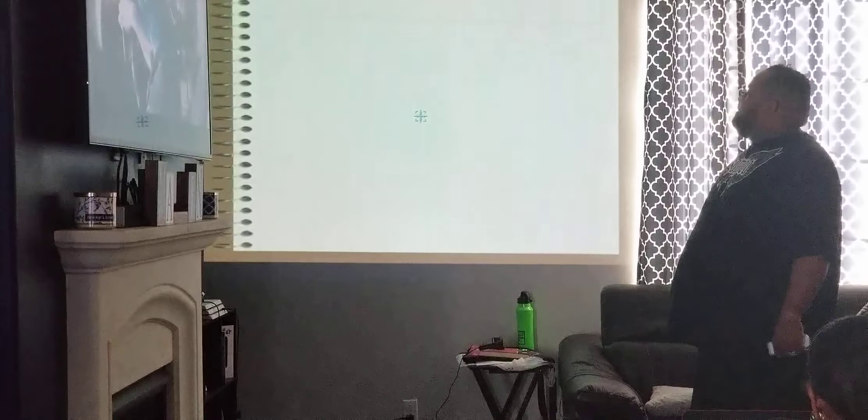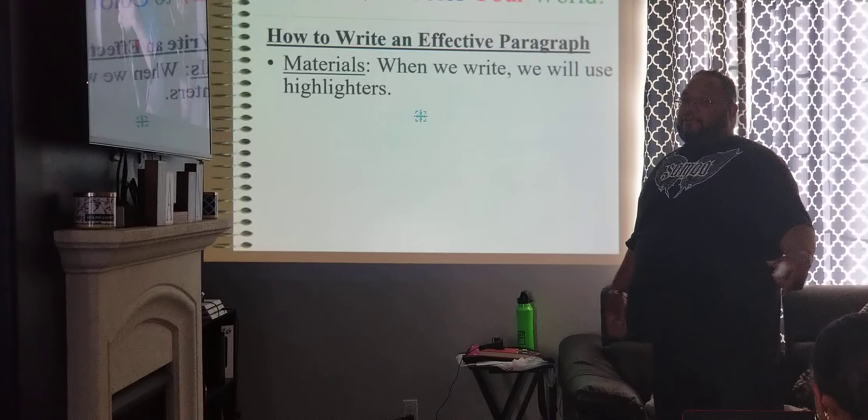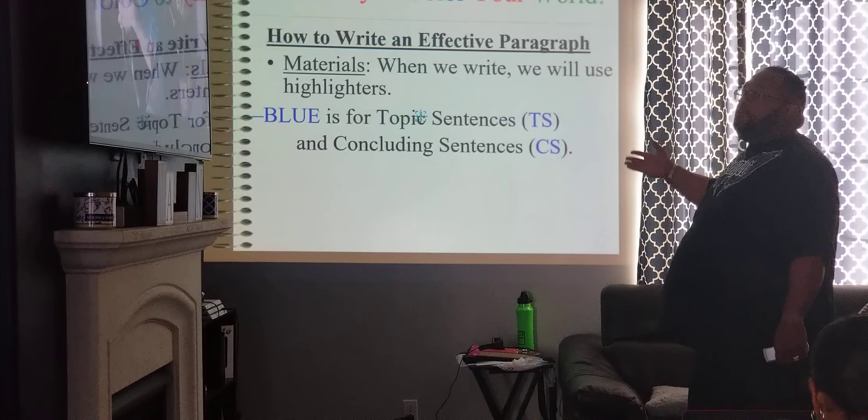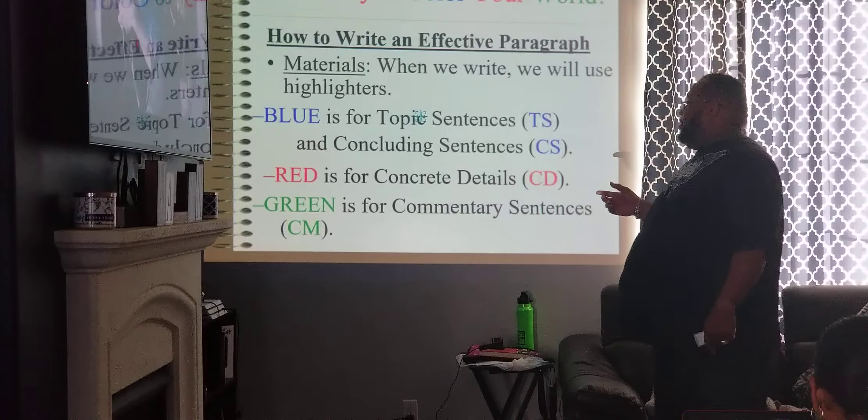Get ready to color your world, ladies and gentlemen. How to write an effective paragraph. Materials: when we write, we will use highlighters. Blue is for the topic sentences, or TS, and the concluding sentences, which is abbreviated CS. Red is for concrete detail, CD. Green is for the commentary sentences, CM.